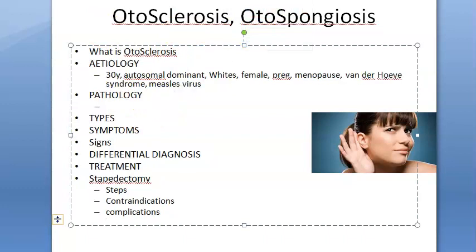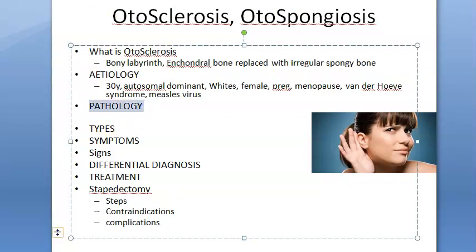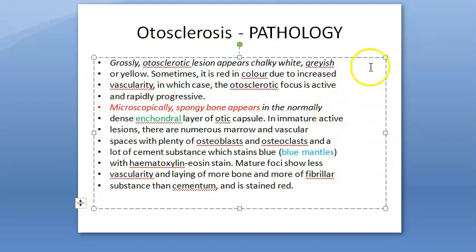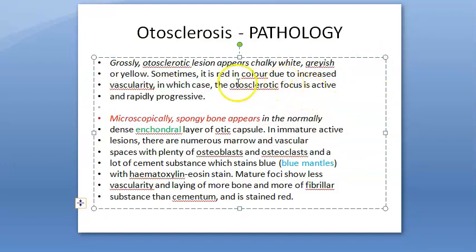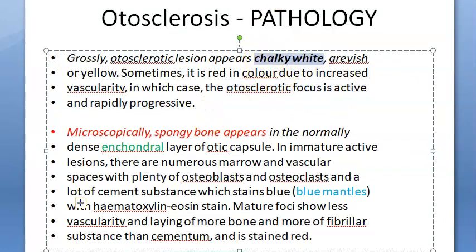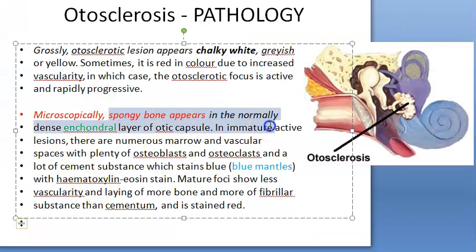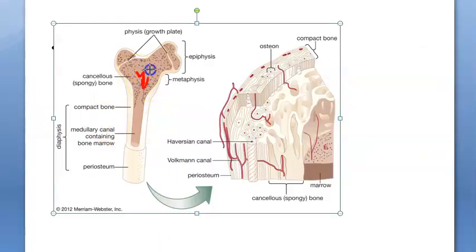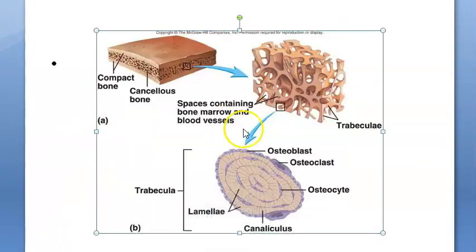Now let's move to pathology — both gross and microscopic findings. Grossly, the otosclerotic lesion appears chalky white to grayish-yellow, with a reddish hue due to increased vascularity. Microscopically, spongy bone appears in the normally dense enchondral layer of the otic capsule, similar to cancellous bone seen in long bones.